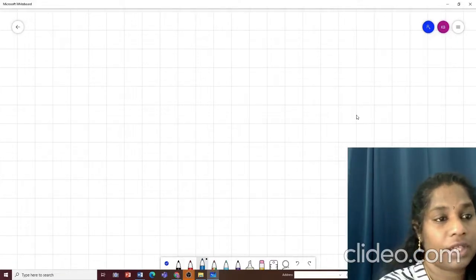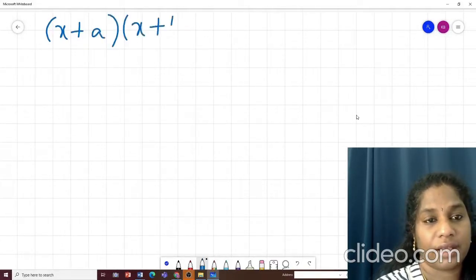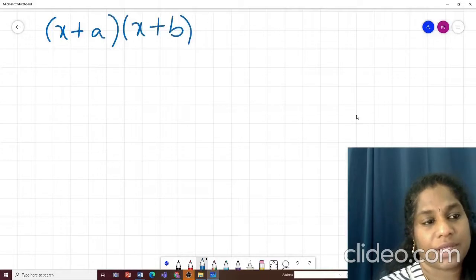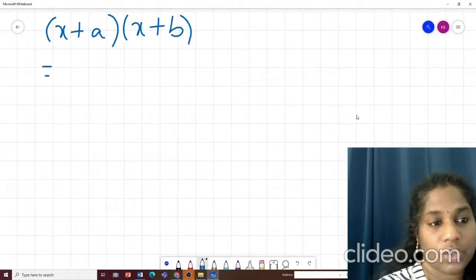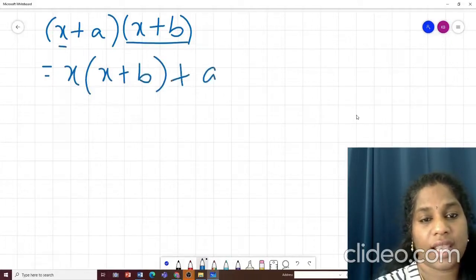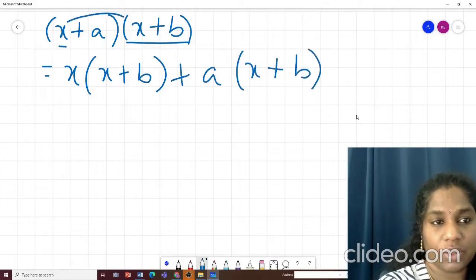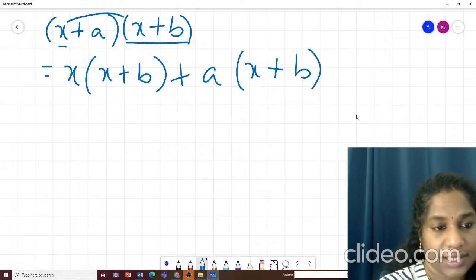So the formula was x plus a into x plus b. Sometimes we get tensed and we forget the answer of this. So we should know how to derive it. So this x I will multiply with this whole term. Then I will say plus a and again I will multiply with the whole term. Generally we do this when we multiply two terms in the brackets, isn't it?